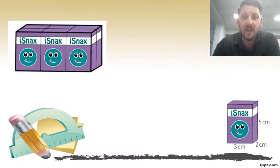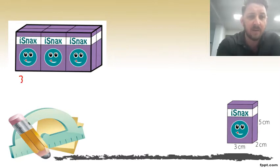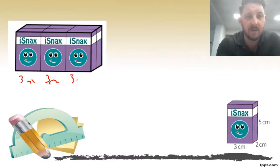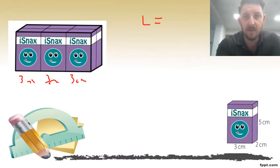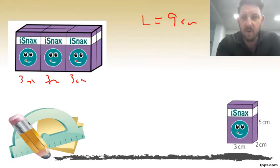If we have a look at our main shape, we can see that at the bottom there is a three centimeter measurement, another three centimeters, and another three centimeters. So we know that the length of our shape is nine centimeters.